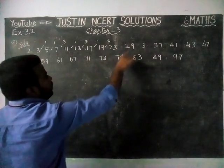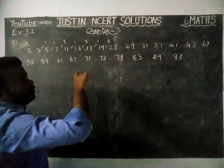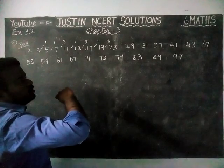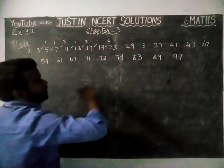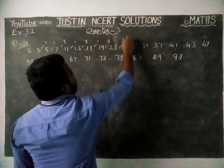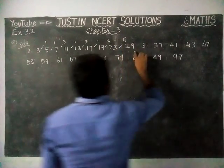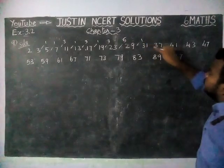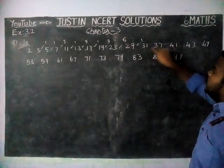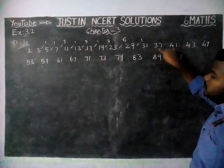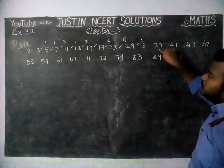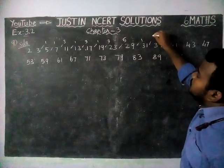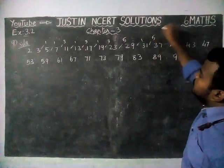Between 23 and 29: 24, 25, 26, 27, 28 — only 5 numbers. And here, only 30 — only one number. Between 31 and 37: 32, 33, 34, 35, 36 — 5 numbers.